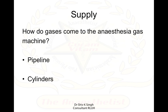Supply is basically how gases come to the anesthesia machine. They come from the pipeline, and to the pipeline they can come from the vacuum insulated evaporator, or from a bank of cylinders from the manifold room, or where there is no pipeline, they can come directly from cylinders.